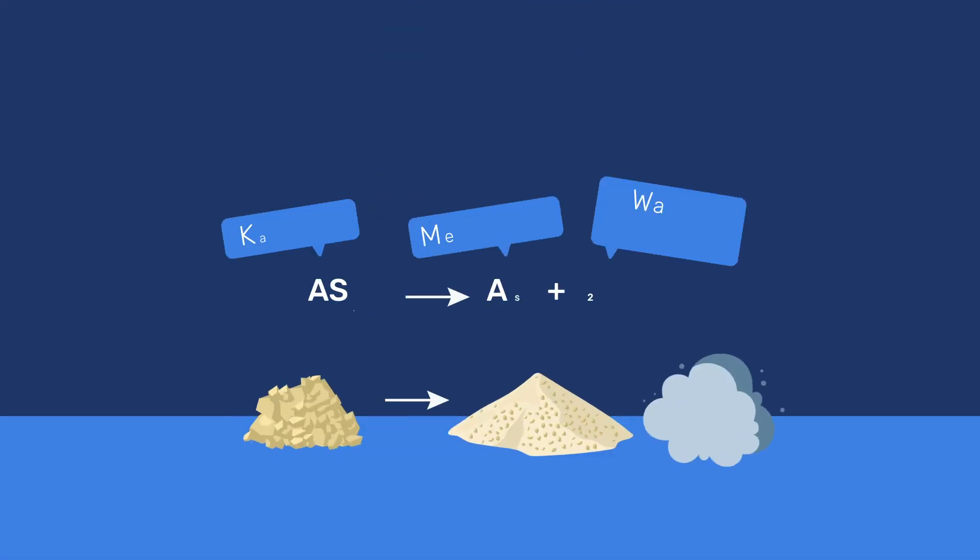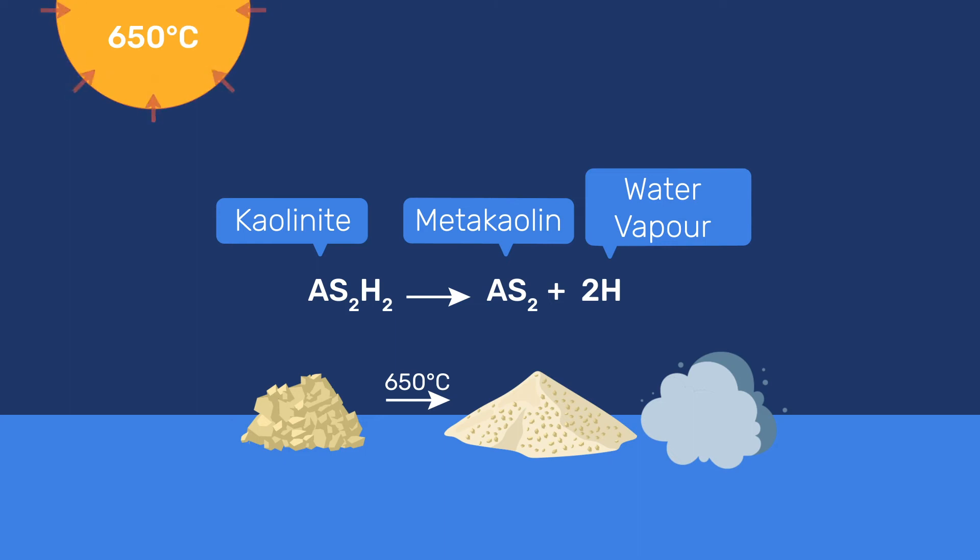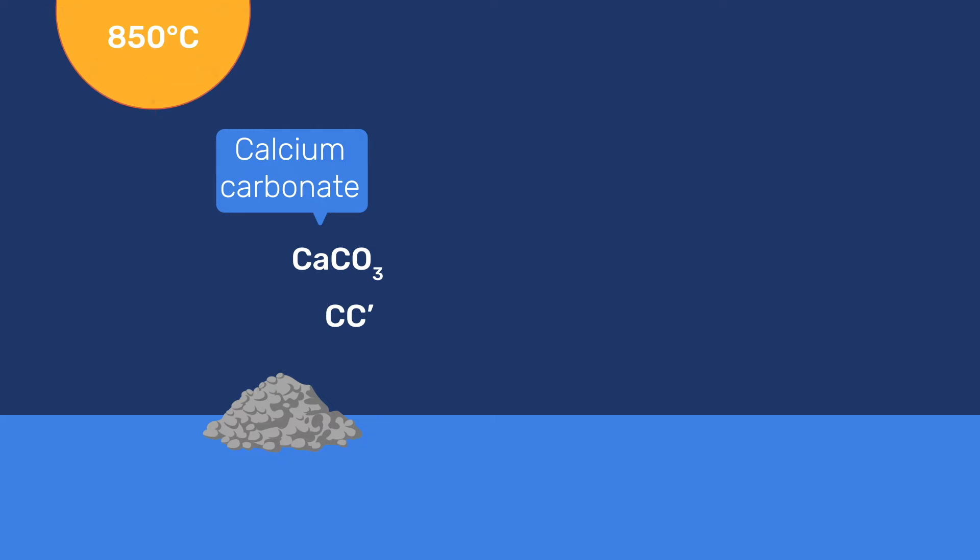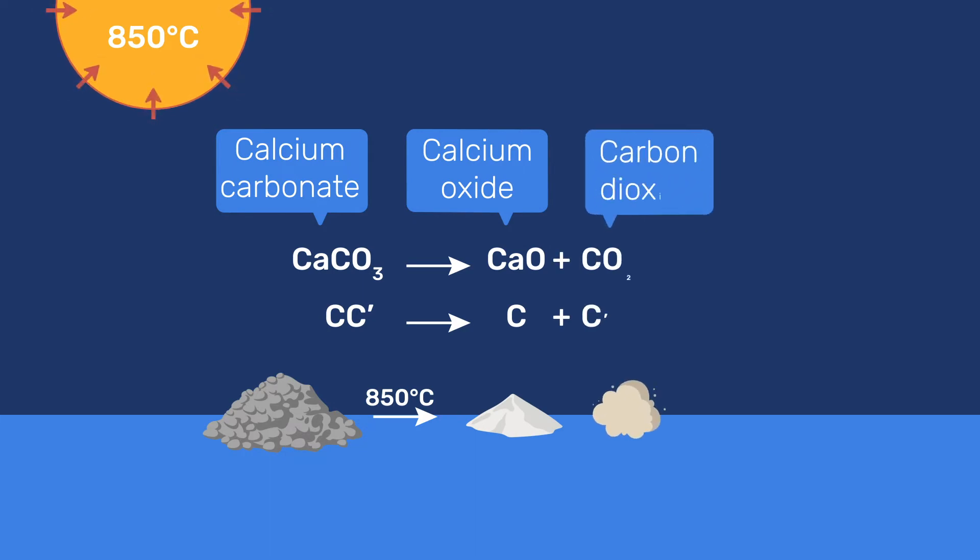The first reaction to take place in the kiln, around 650 degrees Celsius, is the dehydroxylation of the clays. Around 850 degrees Celsius, but depending on CO2 partial pressure, limestone, that is calcium carbonate, decomposes to calcium oxide and CO2.